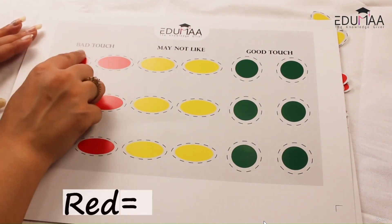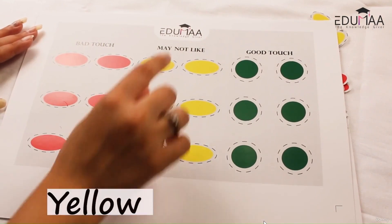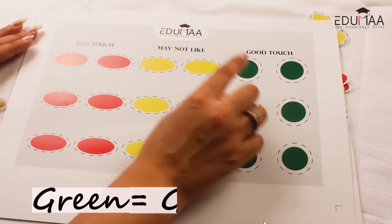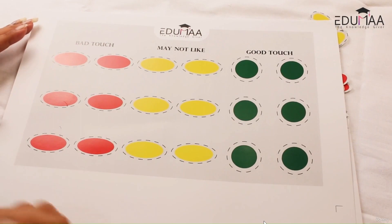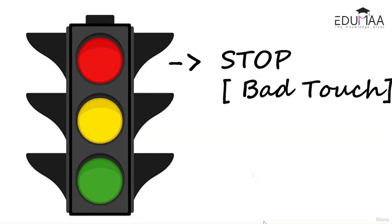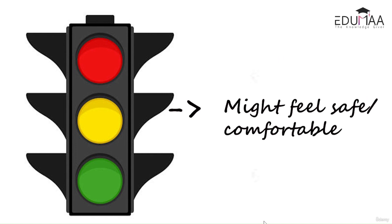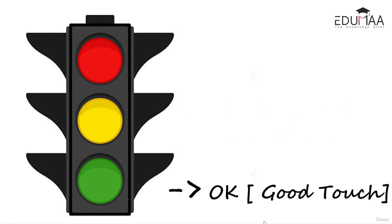The red sticker shows that it is a bad touch. The yellow one shows a touch they may not like. The green one shows that it is a good touch. These represent a traffic light — the red one suggests you should stop, the yellow one suggests you can be cautious or check if you feel comfortable, and the green one suggests it is completely okay for somebody to touch you there.